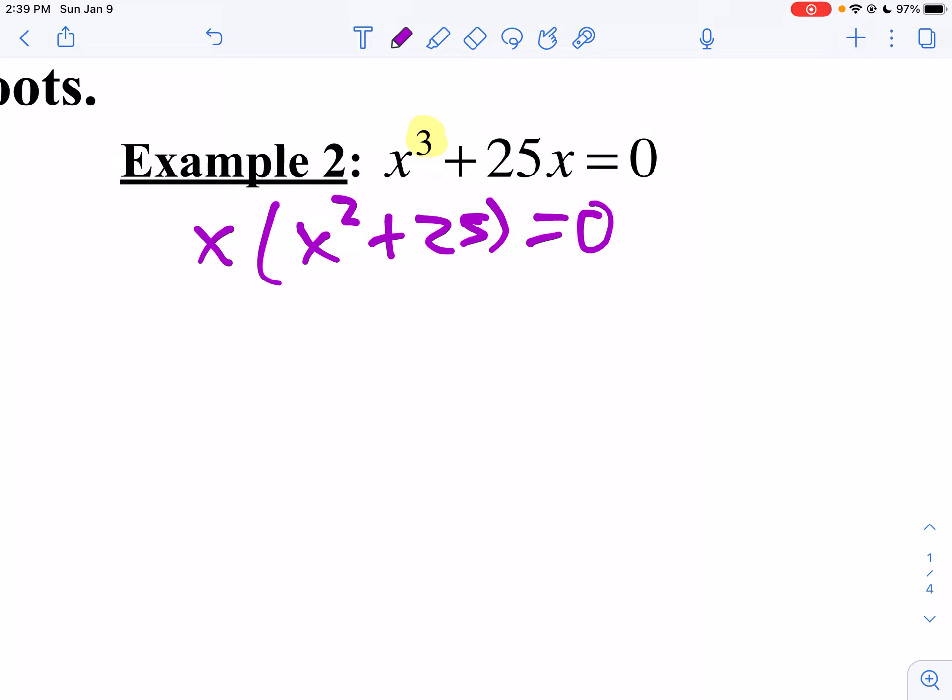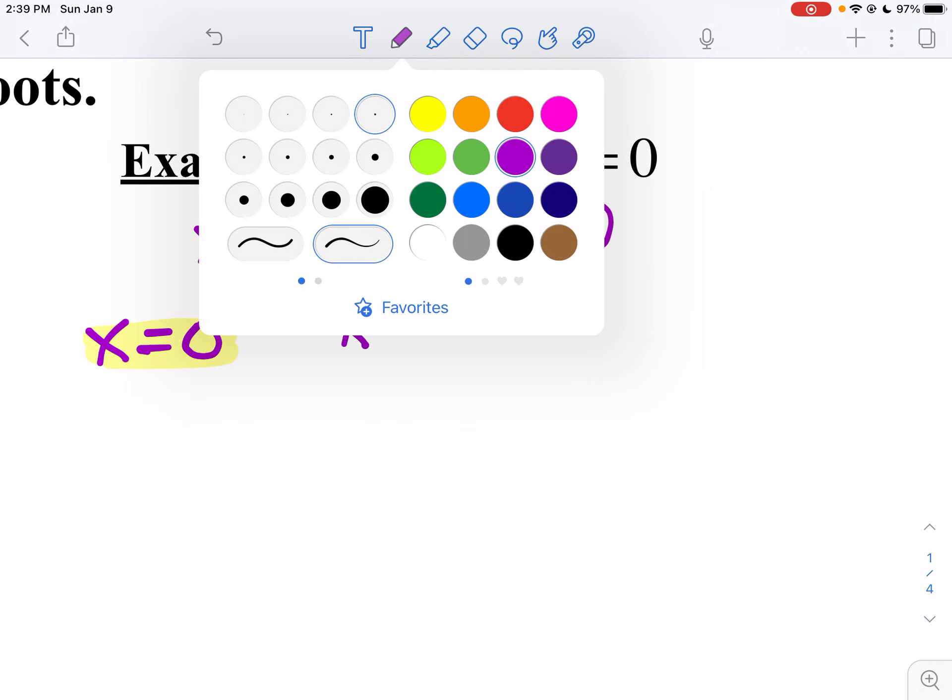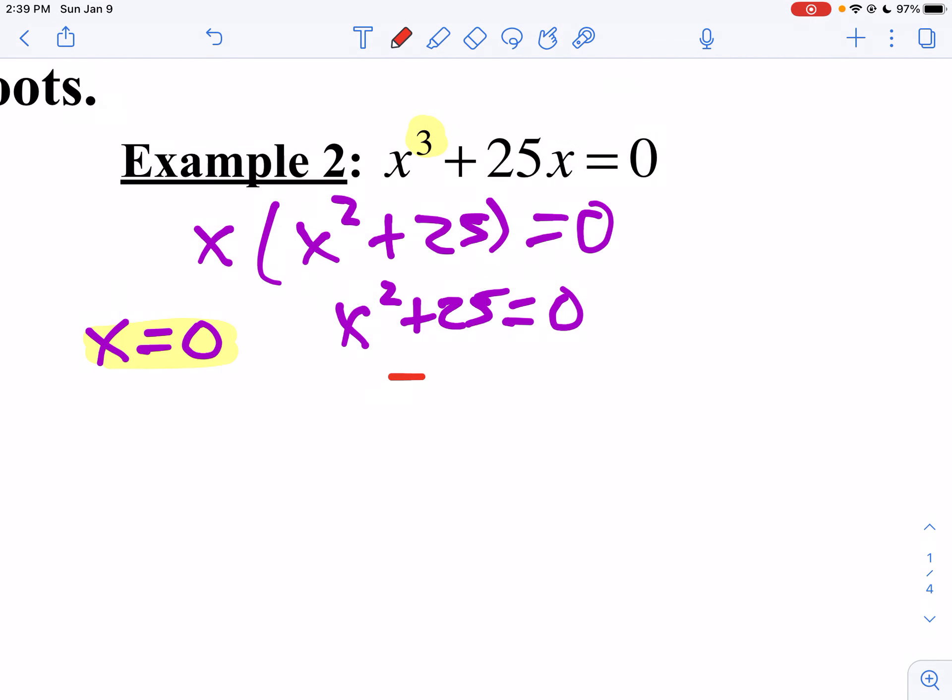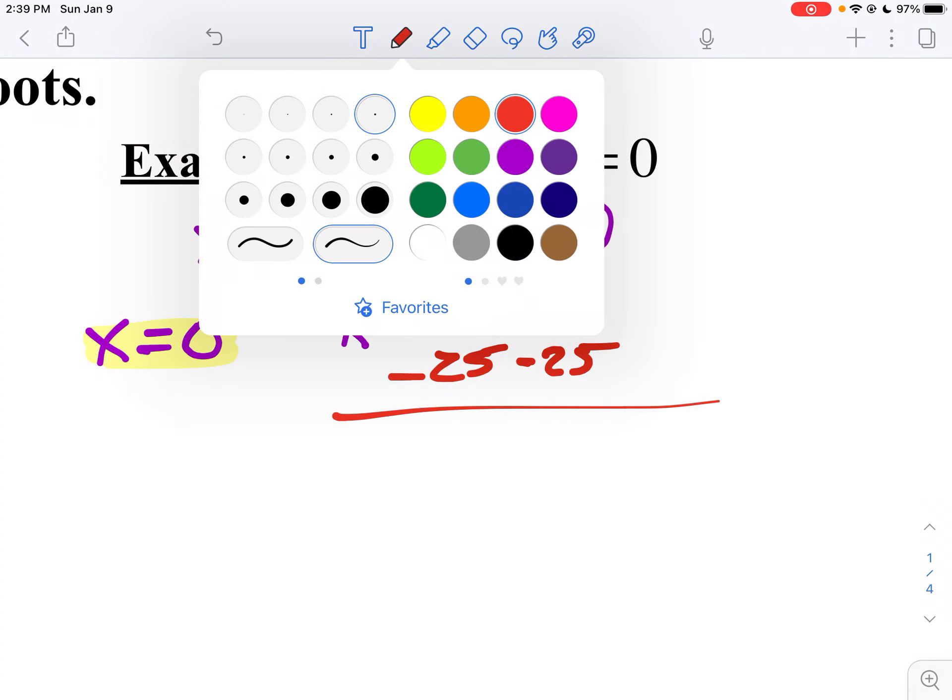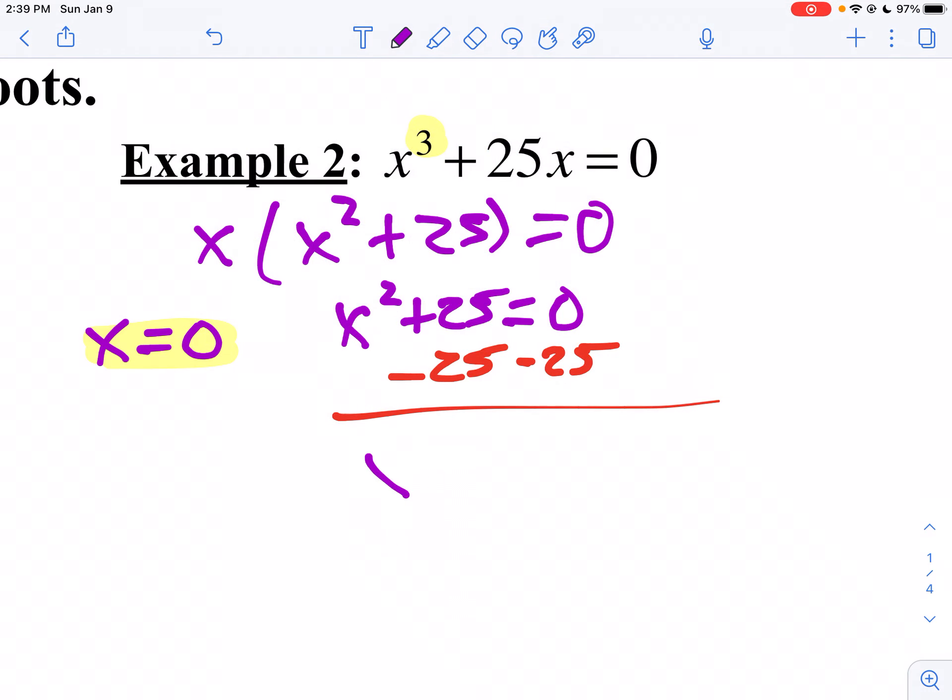Well, I can use my zero product property. I'm going to say x = 0. That's my first root. Now, let's do the second root. So x² + 25 = 0. So then I'm going to minus 25 from both sides. And we get x² = -25. Take the square root of both sides. x = ±5i.